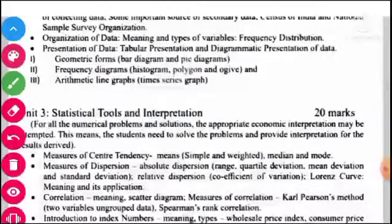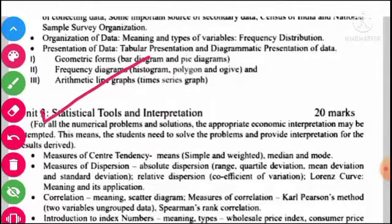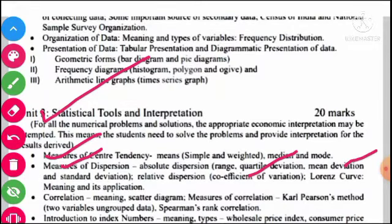हमारा जो Third Unit है, वो है Statistical Tools and Interpretations। यह 20 marks का रहने वाला है। इसमें हम Measures of Central Tendency जिसमें Mean, Median और Mode को discuss करेंगे। फिर Measures of Dispersion जिसमें Absolute Dispersion — Range, Quartile Deviation, Mean Deviation, Standard Deviation — और Relative Dispersion — Coefficient of Variation, Lorenz Curve — इनका Meaning और Application one by one discuss करेंगे।